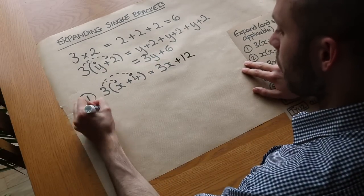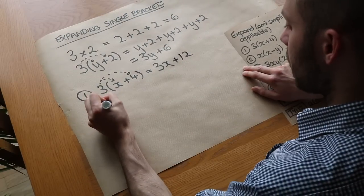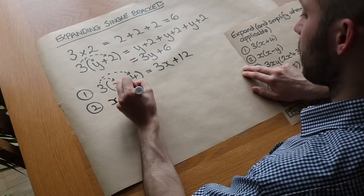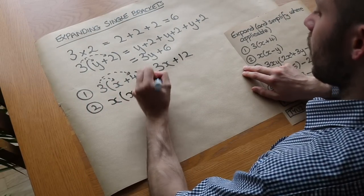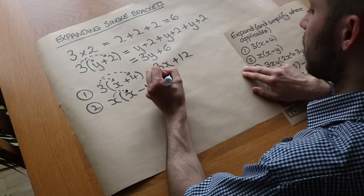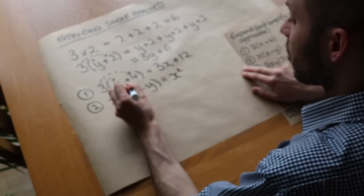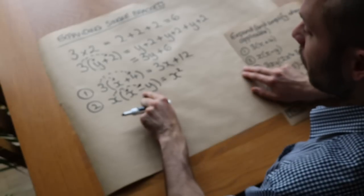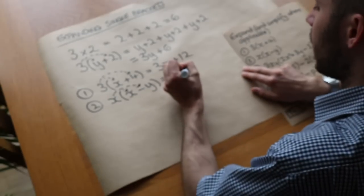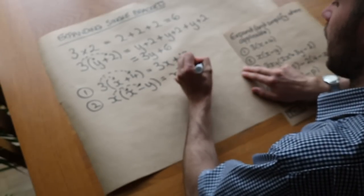Let's do a further one. We've got x times all of x minus y. So as before we do x times the first term, which is x. What is x times x? Well that gives you x squared. And if we do x times minus y, we've got minus there. x times minus y, it's minus xy.